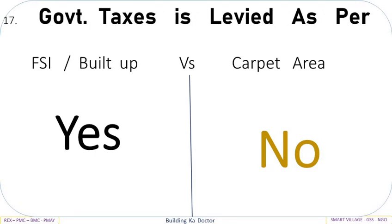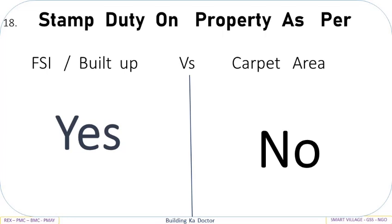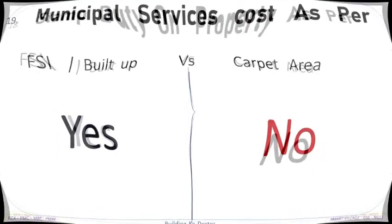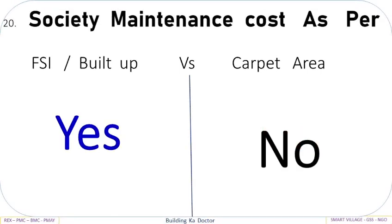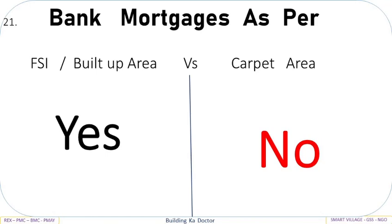Government taxes are levied as per FSI Built-Up: Yes, vs Carpet Area: No. Stamp duty on property is as per FSI Built-Up: Yes, vs Carpet Area: No. Municipal services cost is as per FSI Built-Up: Yes, vs Carpet Area: No. Society maintenance cost is as per FSI Built-Up: Yes, vs Carpet Area: No. Bank mortgages are as per FSI Built-Up: Yes, vs Carpet Area: No.